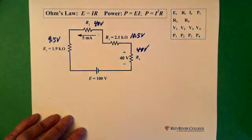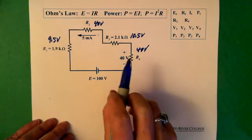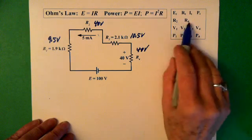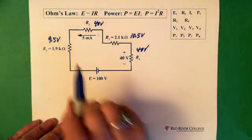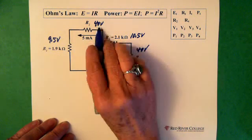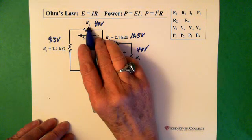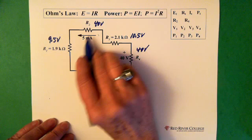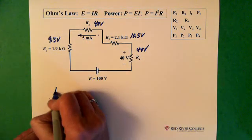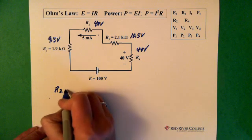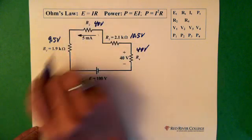Now what else can we do? We know our total current. We need to solve for R2 and R4. So solving for R2 and R4, we know now that we have 40 volts across R2. And we have 5 milliamps going through there. So in order to solve for R2, we would use Ohm's law.